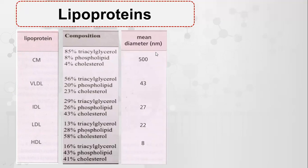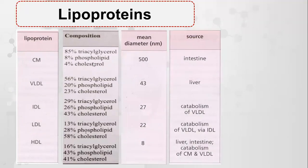Regarding diameter in nanometers, chylomicrons have the largest diameter at 500 nm, while HDL has the smallest at 8 nm. VLDL can be 43 nm, IDL 27 nm, and LDL 22 nm. Regarding source, chylomicrons originate from the intestine, VLDL is produced by the liver, IDL is a catabolic product of VLDL, LDL is also a catabolic product of VLDL via IDL, and HDL is produced by the liver and intestine and is also a catabolic product of chylomicrons and VLDL.